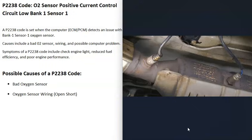They send this information to the computer, which uses it to adjust the air fuel ratio mixture going into the cylinders. When you get a P2238 code, the computer's seeing some problem, mainly inside the wiring on bank one sensor one oxygen sensor.